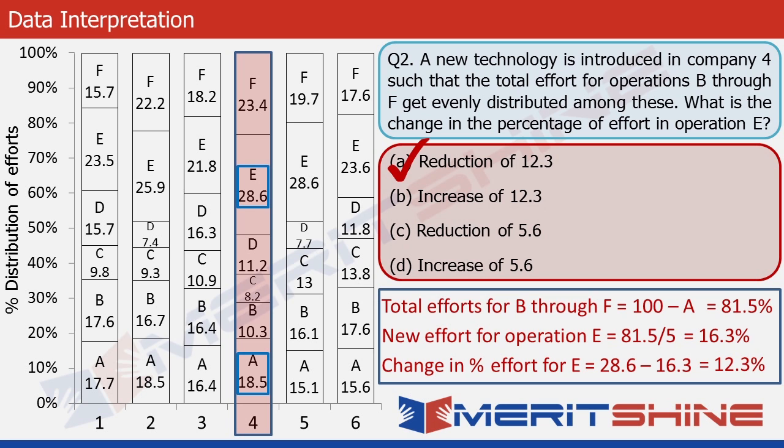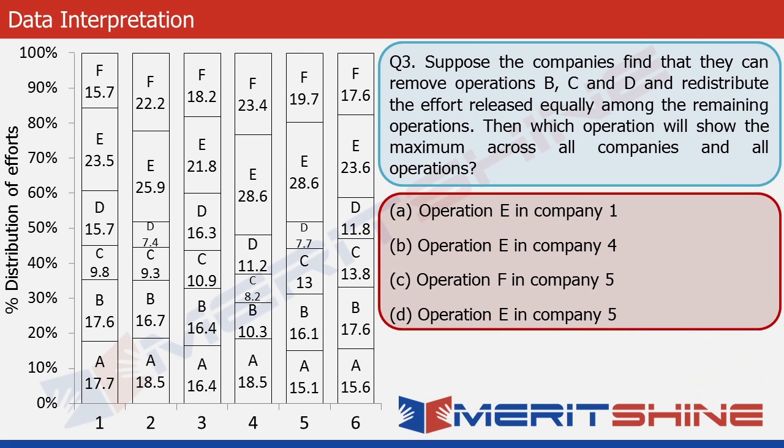Now let's go to the last question of this set, question number 3. This question is about redistribution of effort between different operations. The companies have decided to remove operations B, C and D and redistribute the effort released equally among the remaining operations. We need to find out the operation which consumes the maximum effort across all companies and all operations. Now for a question like this, we'll go with the options only. It's simple, we'll check only for those values given in the options. So we just need to look at companies 1, 4 and 5.